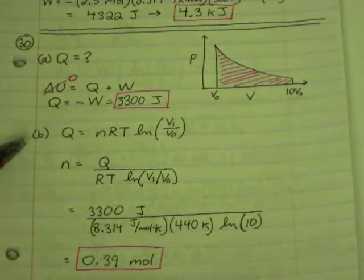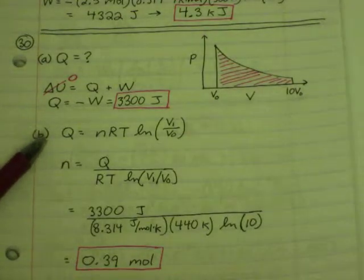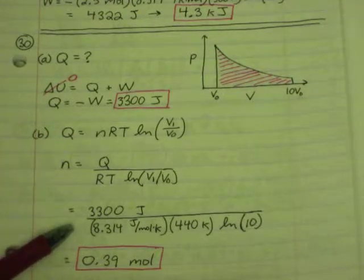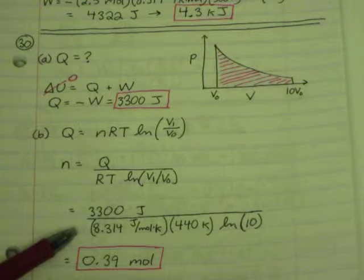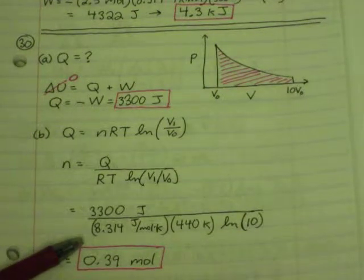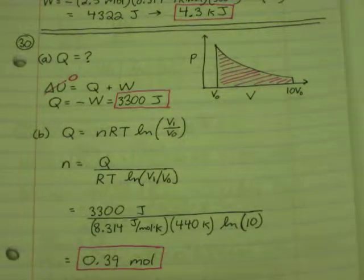Part b, we want to know how many moles there are. So we go to this equation. I think it's equation 18.4 in your book, one that we use a few times in this homework set. Q equals nRT times the natural log of V1 over V0. We solve for n, 3,300 joules, divided by 8.314. The temperature is 440 kelvin. And then natural log of V1 over V0, it expanded by a factor of 10, so that's 10, and you get an answer of 0.39 moles.